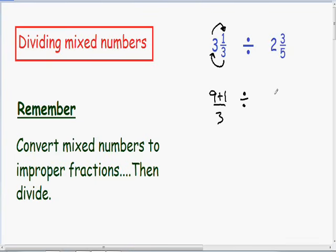And then in the numerator, we need to multiply the denominator of 5 by the whole number of 2. So 5 times 2 is 10.